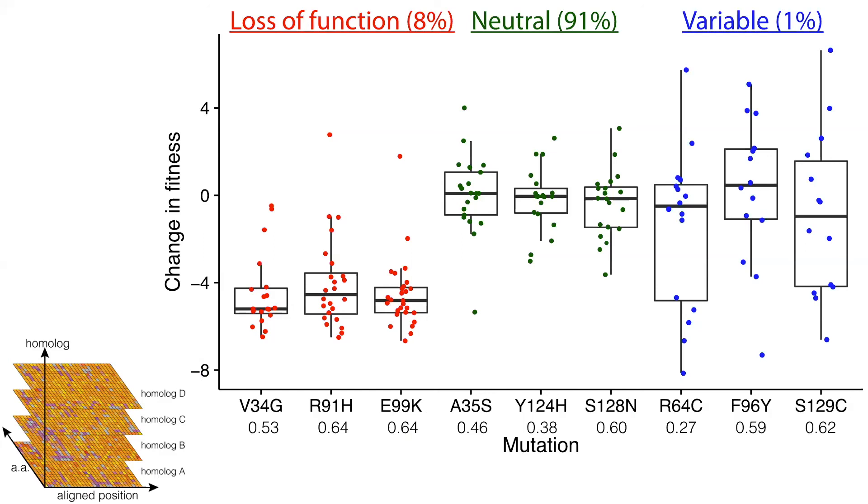And so you see that we can divide them into primarily loss of function mutations. So no matter what the rest of your sequence is, you're getting loss of function, primarily at highly conserved sites, neutral mutations, and by far the most interesting is these highly variable mutations.